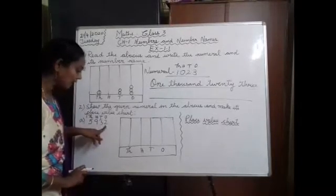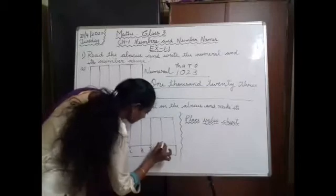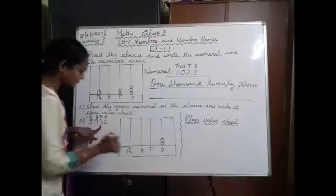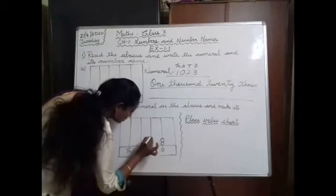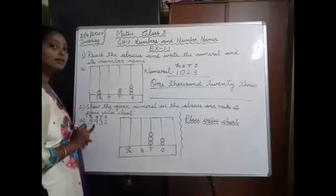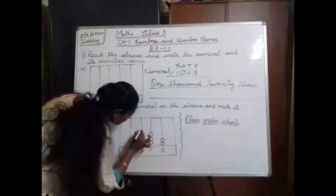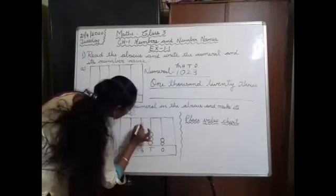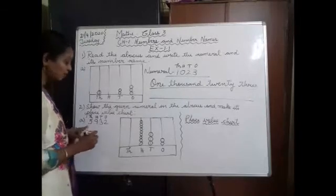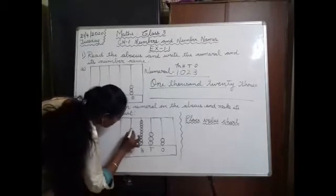In the ones place, how many balls do we draw? 2 — 1, 2. In the tens place, how many balls? 3 — 1, 2, 3. In the hundreds place, how many? 9 — 1, 2, 3, 4, 5, 6, 7, 8, 9. In the thousands place, how many balls? 5 — 1, 2, 3, 4, 5. After drawing the balls, write the number at the bottom: 5,932.